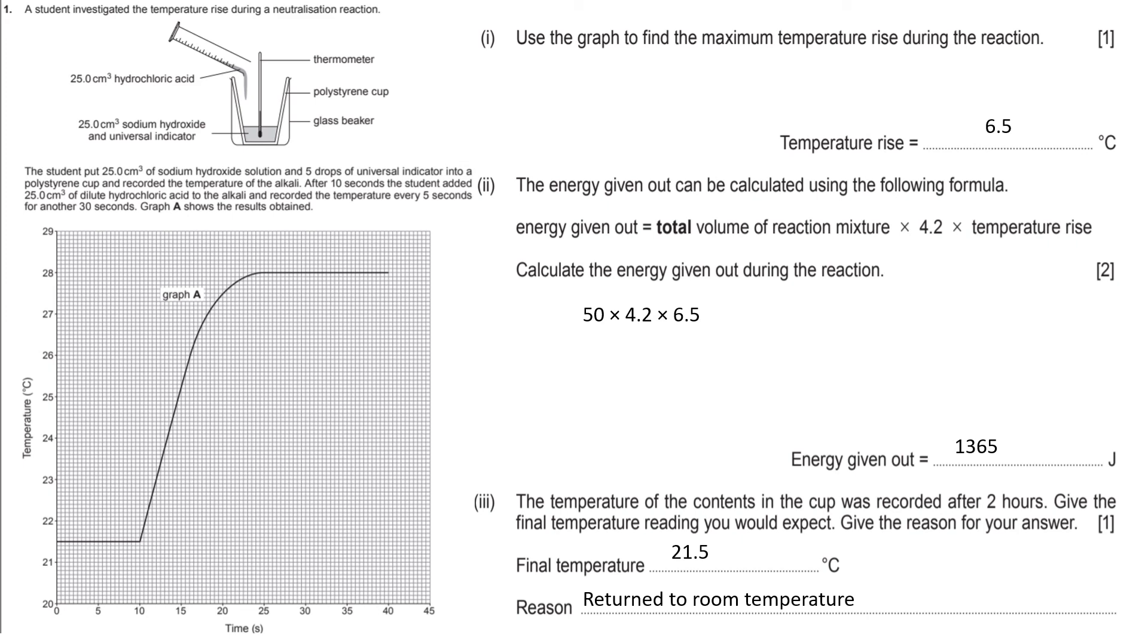The next question. The energy given out can be calculated using the following formula. They've given us the formula: energy given out equals the total volume of the reaction mixture times 4.2 times the rise in temperature. Calculate the energy given out of the reaction.